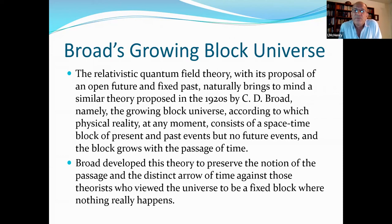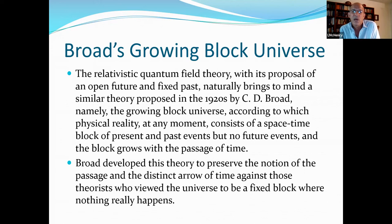The relativistic quantum field theory, with its proposal of an open future and a fixed past, naturally brings to mind the theory espoused by C.D. Broad in the 1920s, namely the growing block universe, according to which physical reality at any moment consists of space-time block of present and past events, but no future events, and the block grows with the passage of time. So Broad developed this theory to preserve the notion of the passage and the distinct arrow of time against those theorists who viewed the universe to be a fixed block where nothing really happens. In other words, we have a more sort of dynamic picture of reality growing here.